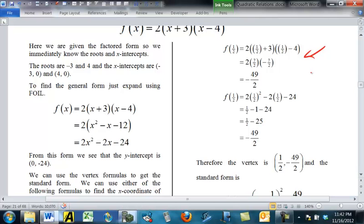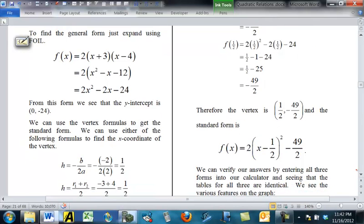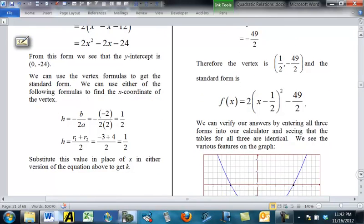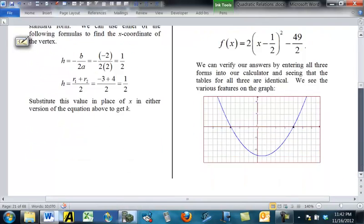Or I've put it also in place of the X in the general form, and you get the same thing. So, you don't have to do both of those. Just do one or the other, and that gives you the vertex. Of course, once you have the vertex, then you have the standard form. F of X is 2 times X minus 1 half square minus 49 halves. Of course, you could write those in decimals. And you can see all of this on the graph there as well.